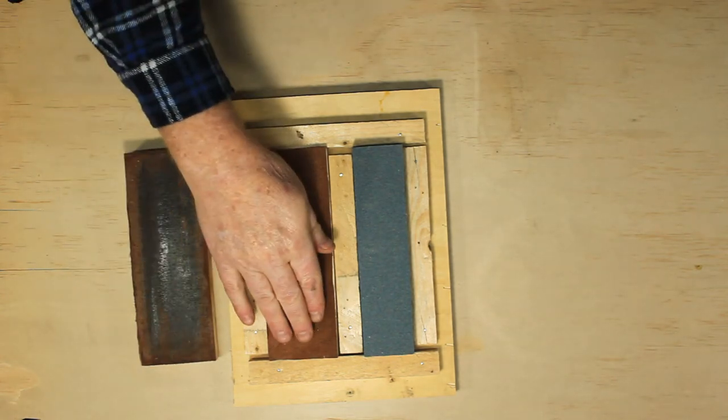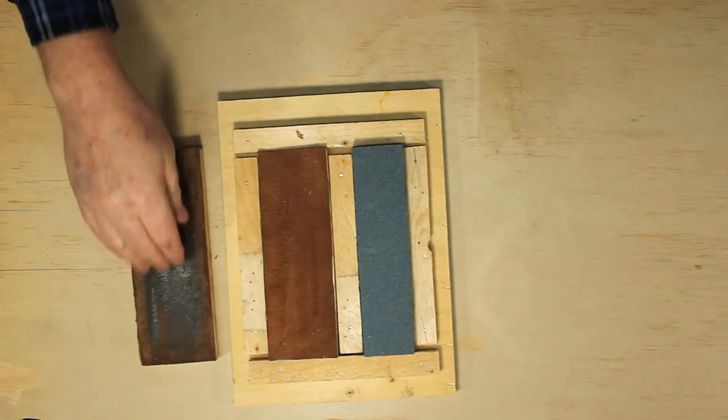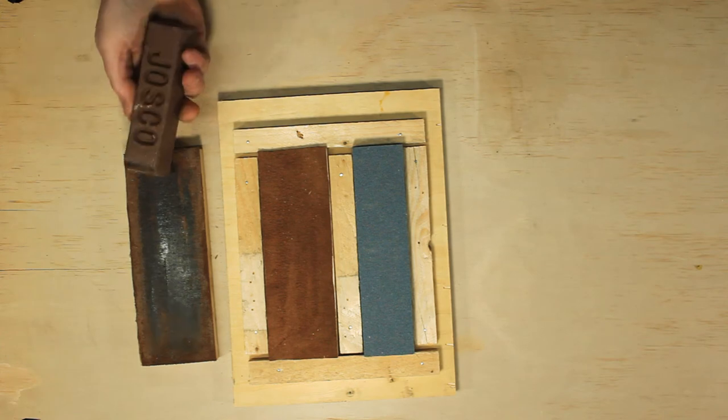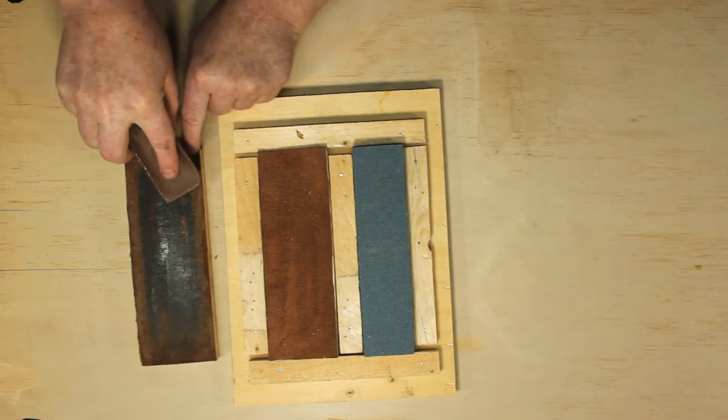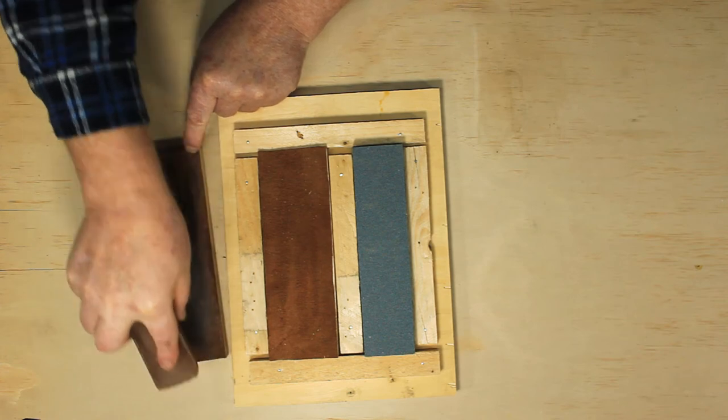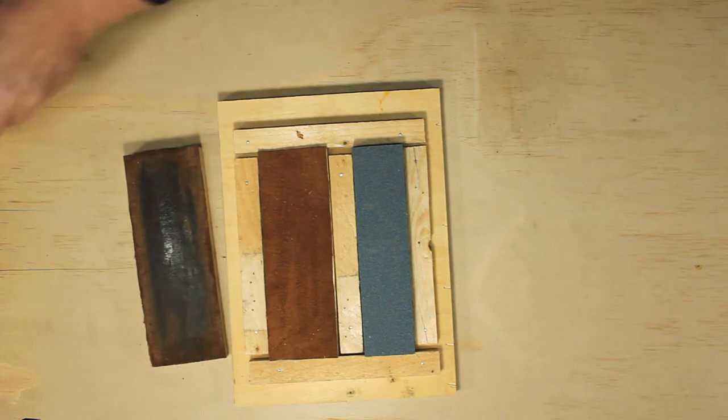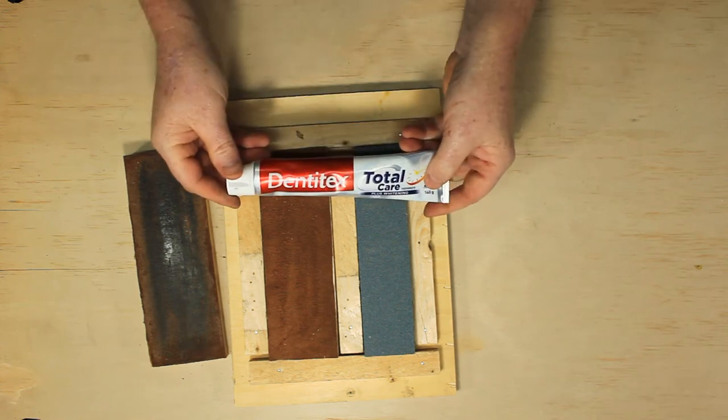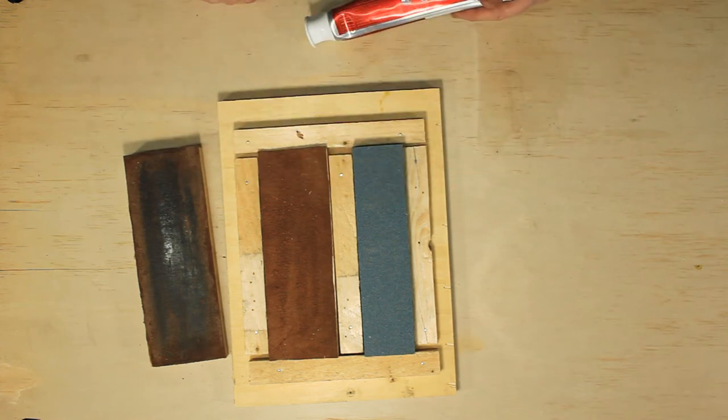You normally don't use the strop dry, you would put some sort of buffing compound on. I usually use a block of this stuff, which is used by people who are using buffing wheels for polishing. However, I've also heard that toothpaste can work, so this seems like a good time to try.